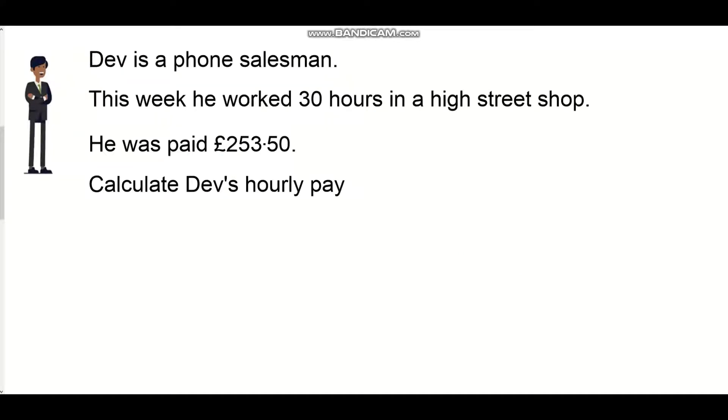Here's another slightly more complicated example. Dev is a phone salesman. This week he worked 30 hours in a high street shop. He was paid £253.50 for that. Calculate Dev's hourly pay. We've got our earnings of £253.50 and 30 hours that he worked. So we need to divide 30 into £253.50.